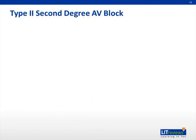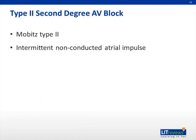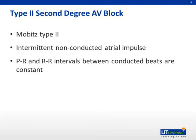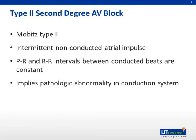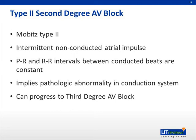Type 2 second-degree AV block, also called Mobitz type 2, is defined by an intermittent non-conducted atrial impulse where the PR and RR intervals between conducted beats remain constant. This is the major difference from type 1: both involve a non-conducted atrial impulse, but type 2 has constant PR and RR intervals while type 1 has progressive PR prolongation and RR shortening. This finding implies a pathologic abnormality in the conduction system and can progress to third-degree AV block, making it extremely important to differentiate the two types.